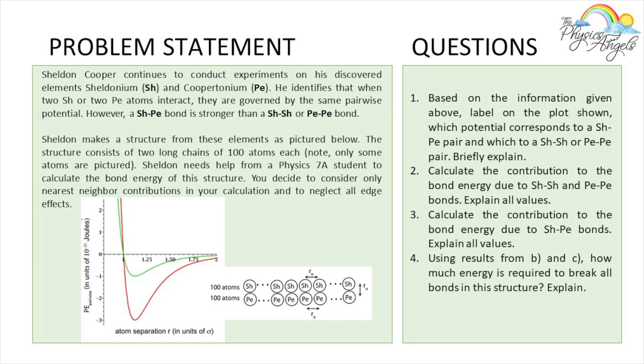Okay, so this is the problem we're going to be working with. We have Sheldon Cooper continues to conduct experiments on his discovered elements Sheldonium and Coopertonium. He identifies that when two Sh or Pe atoms interact they are governed by the same pairwise potential. However, a Sheldon-Coopertonium bond is stronger than either Sheldon-Sheldon or Cooper-Cooper bond. Based on the information above, label on the plot shown which potential corresponds to a Sh-Pe pair.